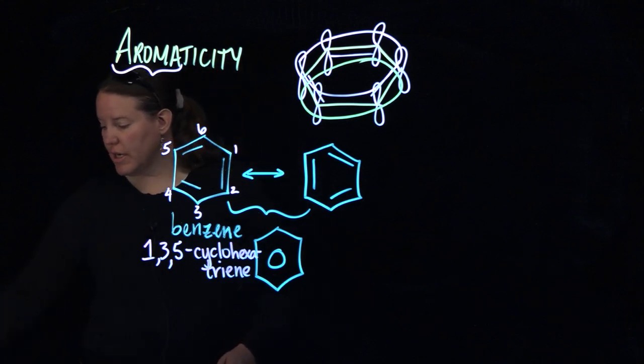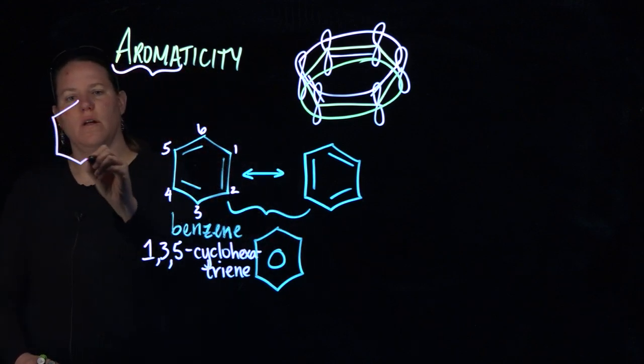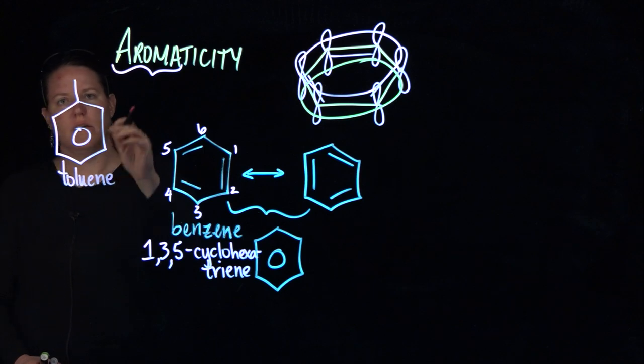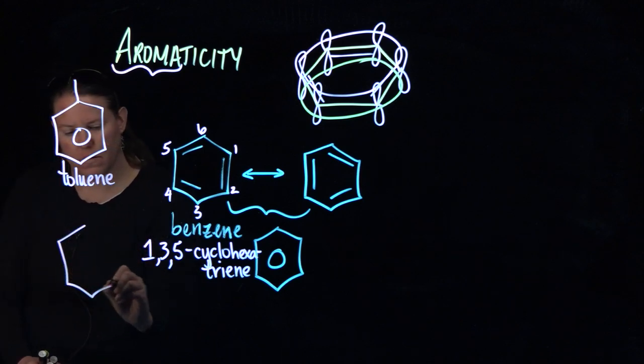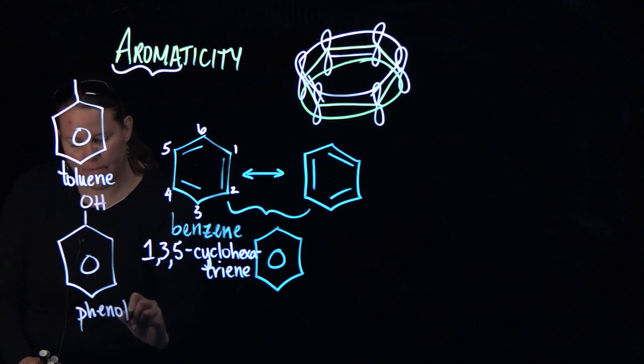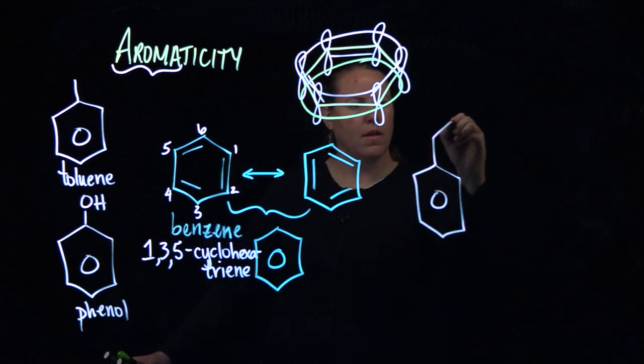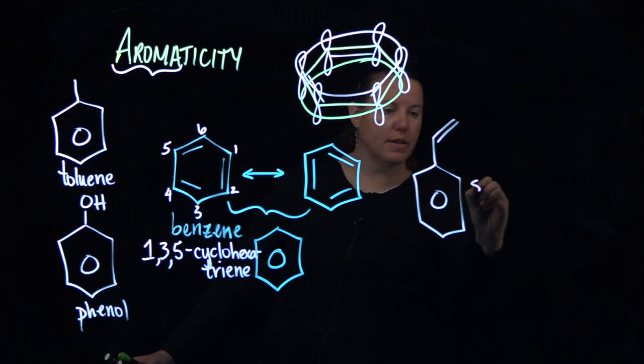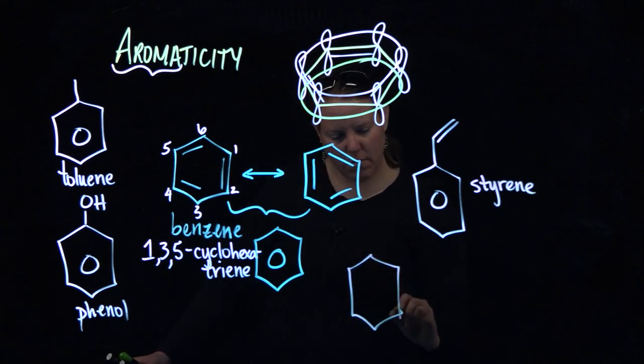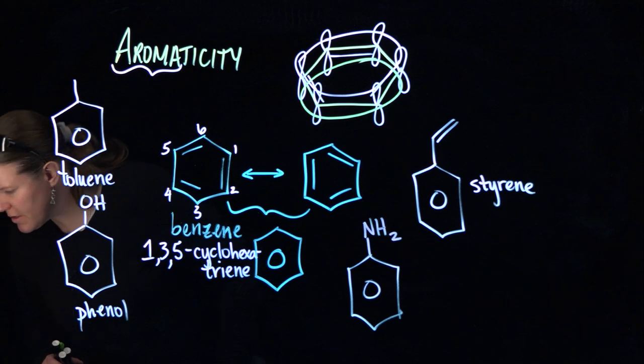There are several common names that you're going to need to know. There's a whole list of them in your book. We'll talk about some of these here. For instance, here's toluene. It has a single methyl group coming off of it. OH is a phenol. You have something like that with a conjugated double bond. That's styrene, right? These are all benzene rings, right? With an NH2 I believe is called aniline.